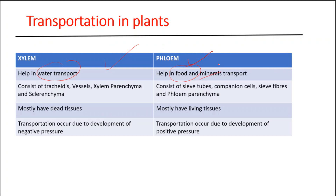Next, the difference between xylem and phloem is that xylem tissue is combined with four different types of cells. First is tracheid, second is vessels, third is xylem parenchyma, and fourth is xylem sclerenchyma.